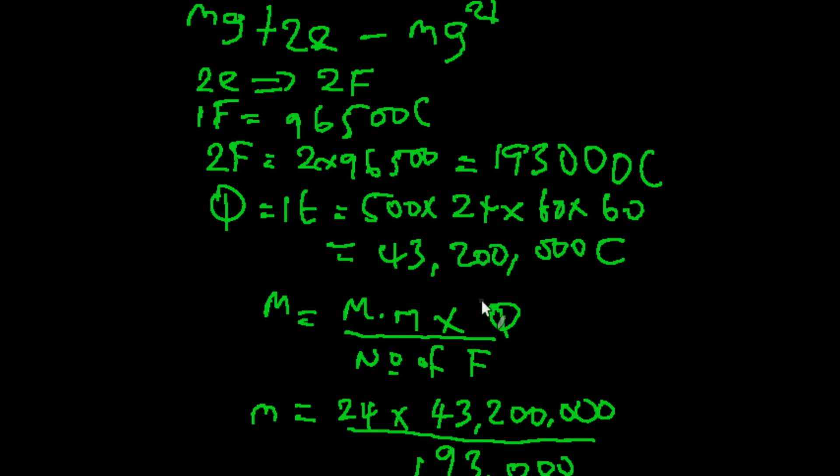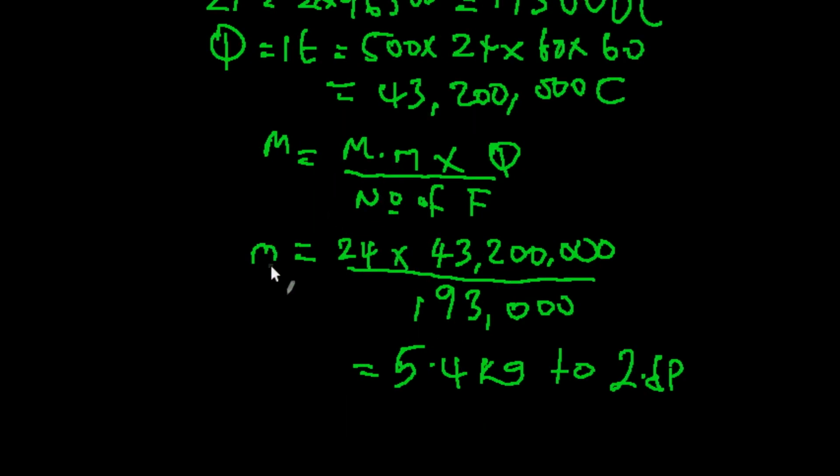And we're going to be having this value here. For us to solve the problem, we're going to be using the formula: mass is equal to molar mass multiplied by quantity of electricity all over number of faradays. That will give us 24, which is the molar mass of magnesium, multiplied by the value (the quantity of electricity) divided by 193000. That is the number of faradays. And so our answer is going to be 5.4 kg to two decimal places.